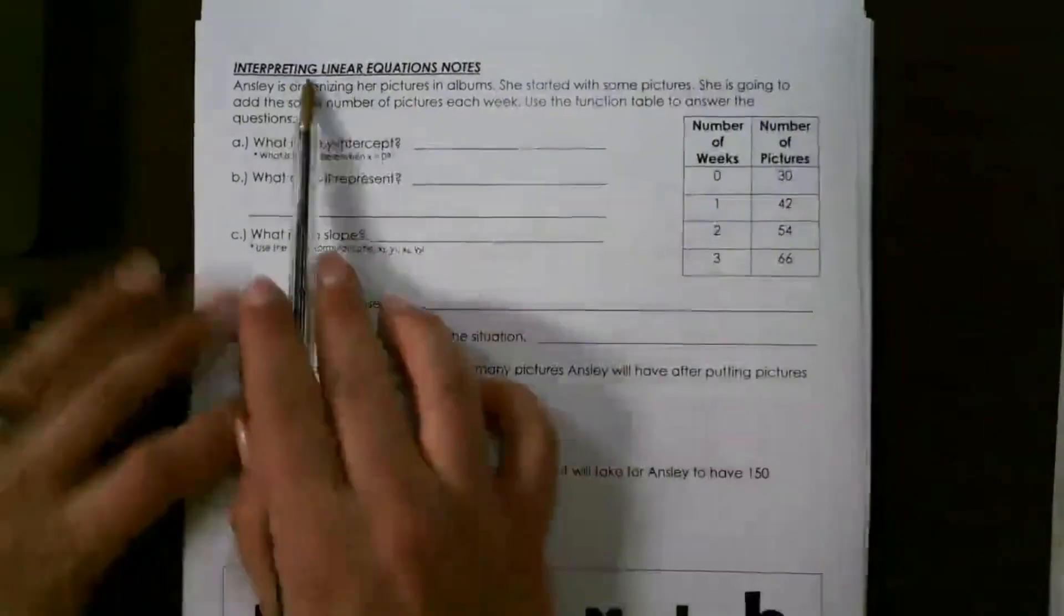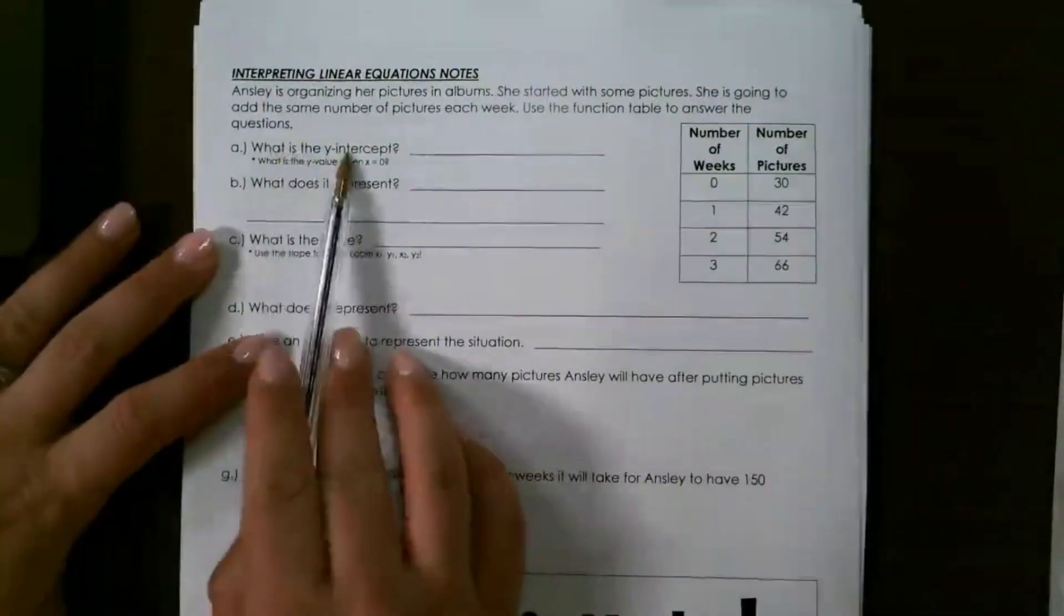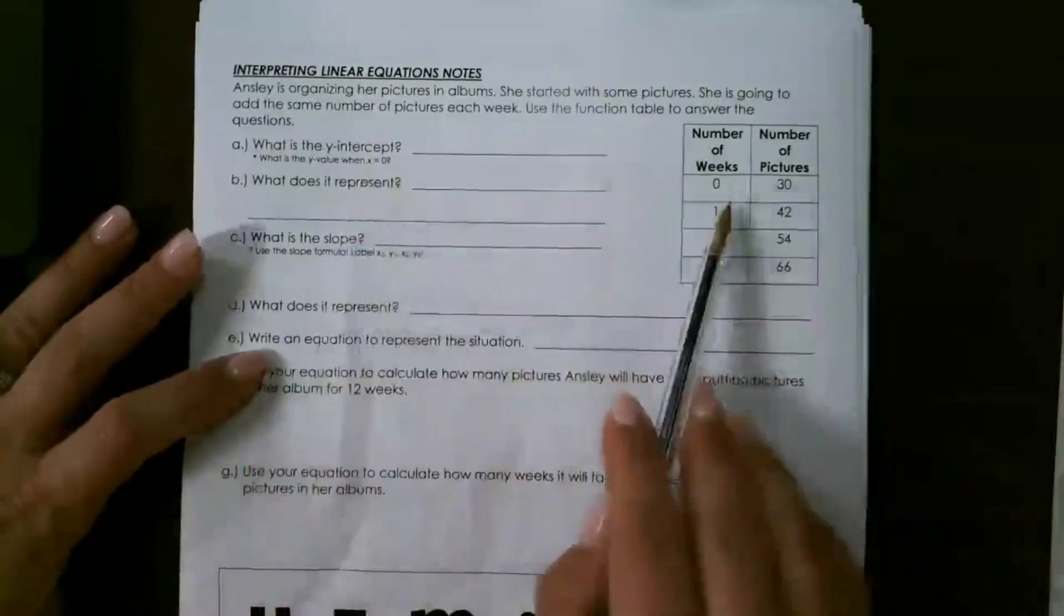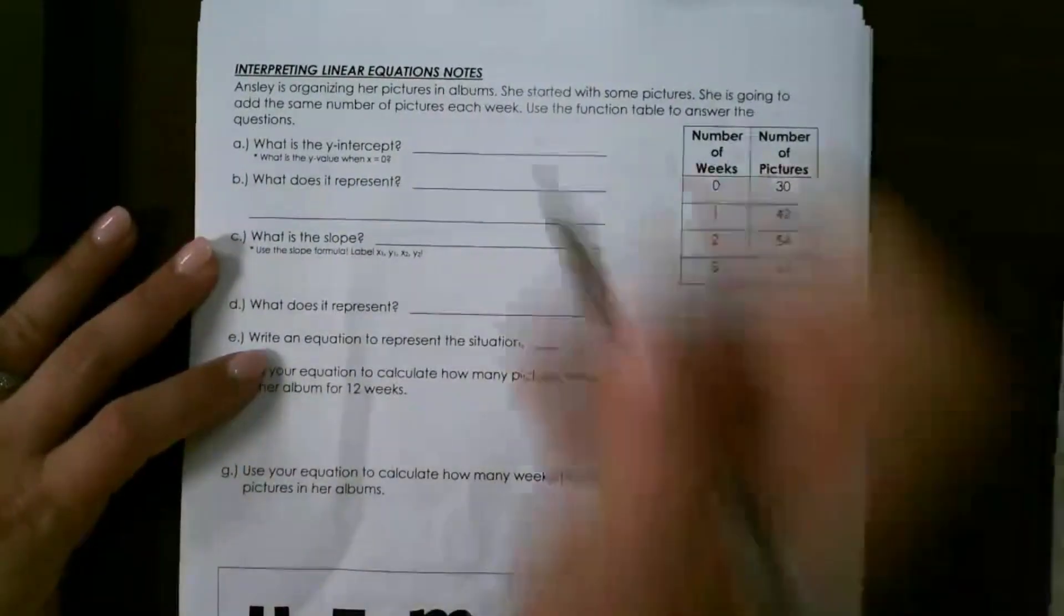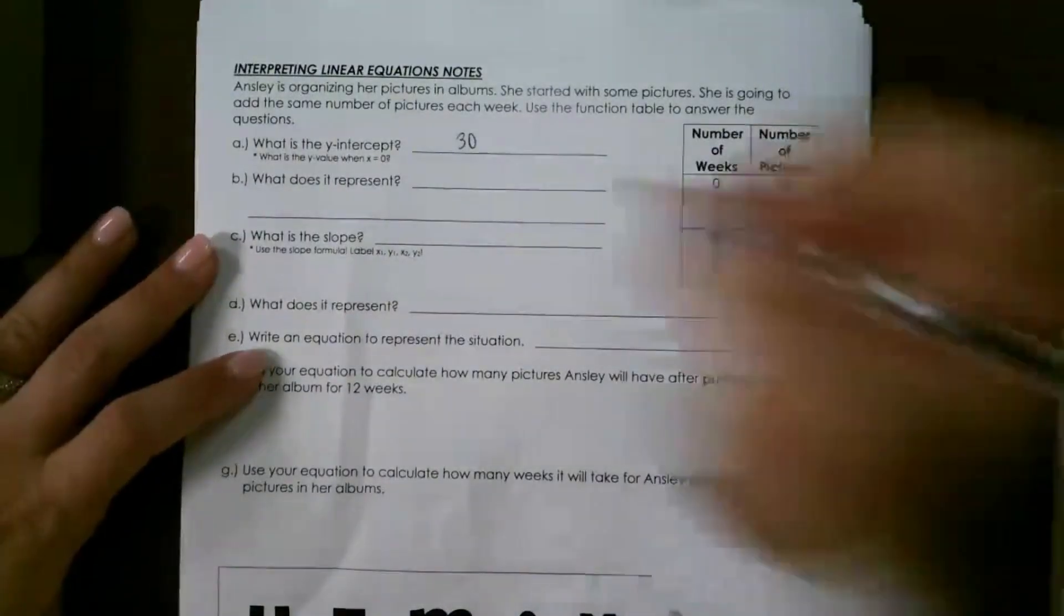Let's take a look at interpreting linear equations from a table. So first we want to find the y-intercept, which is the y value when x equals 0. So if x equals 0, the y-intercept would be 30. This represents the number of pictures that she started with.